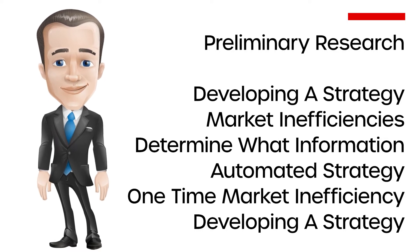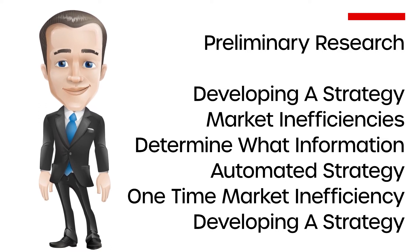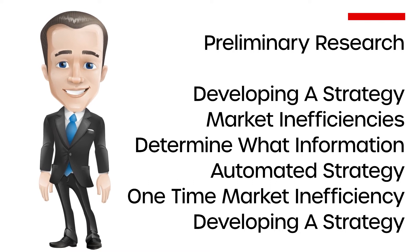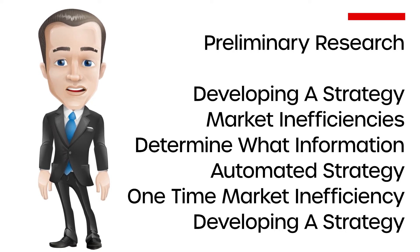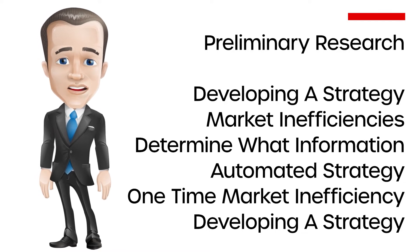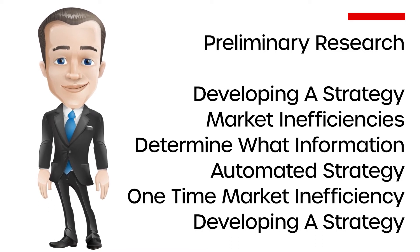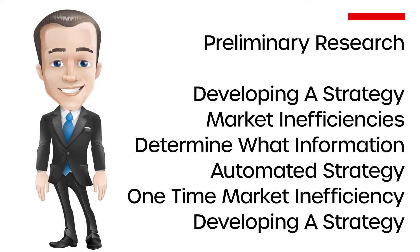Preliminary Research. This step focuses on developing a strategy that suits your own personal characteristics. Factors such as personal risk profile, time commitment, and trading capital are all important to think about when developing a strategy. You can then begin to identify persistent market inefficiencies. Having identified a market inefficiency, you can begin to code a trading robot suited to your own personal characteristics.